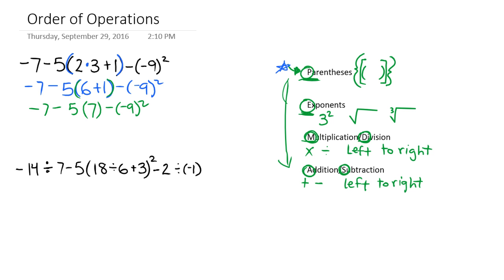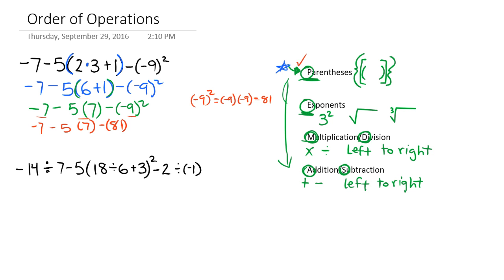And now we don't have anything more in parentheses, so we can check that off. Then we go to exponents. We see we don't have an exponent here, we don't have one here, but we have one here. So we look at it and we say negative 9 squared — notice how it's in parentheses — is the same as saying negative 9 times negative 9, which is a positive 81. So we say negative 7 minus 5 times 7 minus 81.